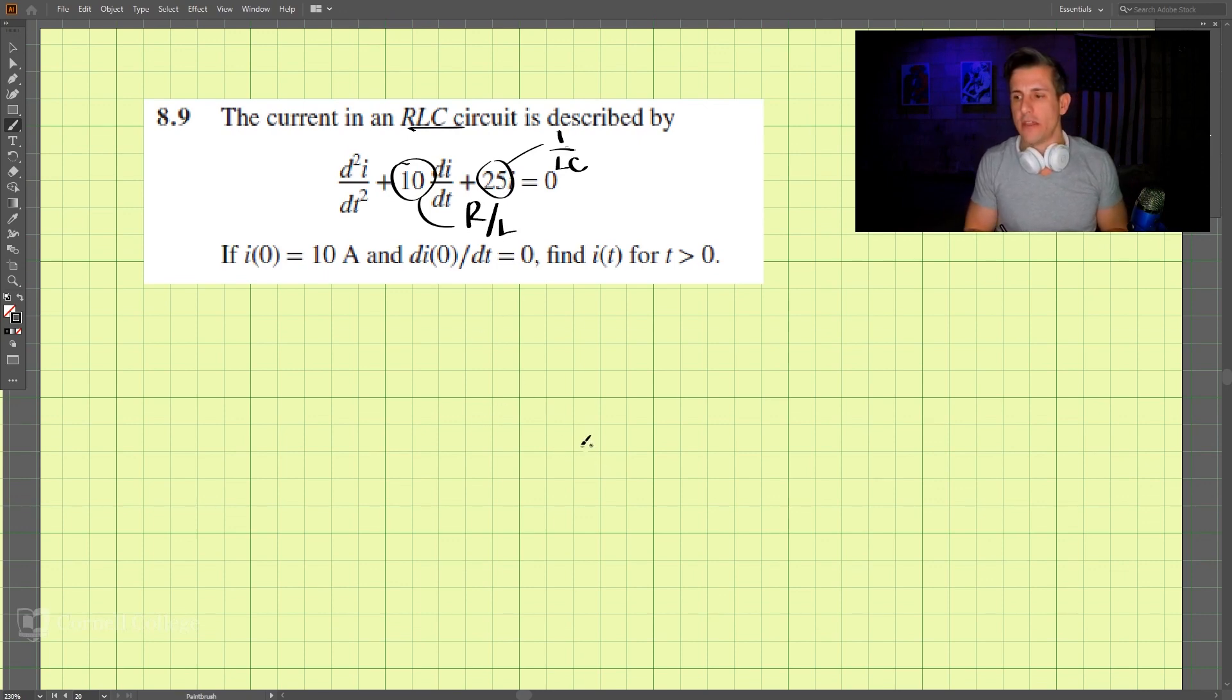Let's go ahead and calculate our resonant frequency and alpha. Well, alpha comes out to be alpha equals R over 2L. So if this is R over L, then we would just need to divide this by 2, and that is equal to 5.